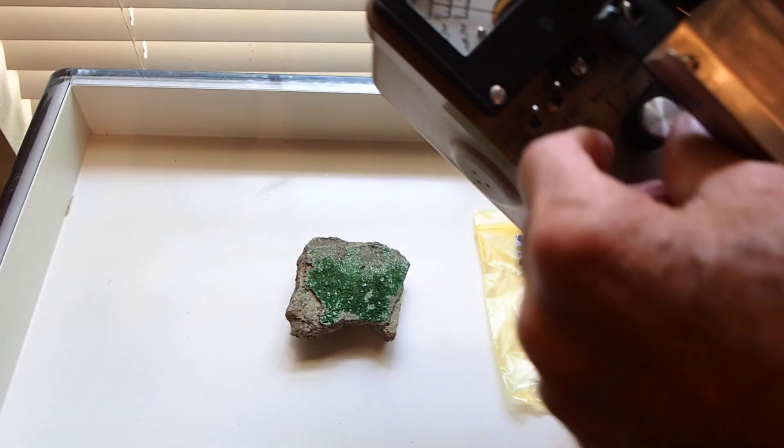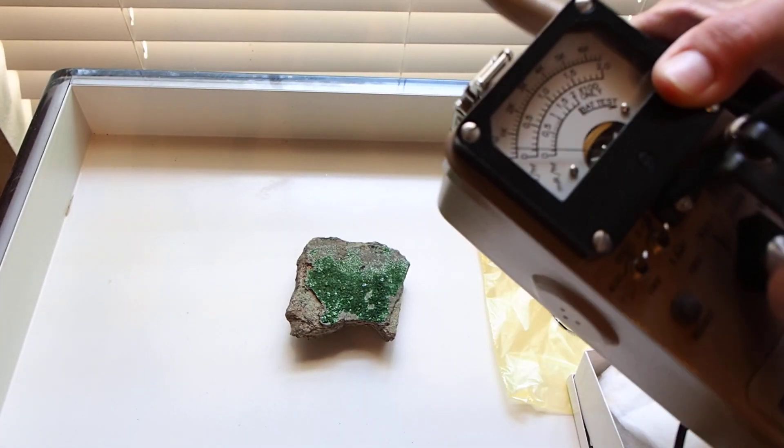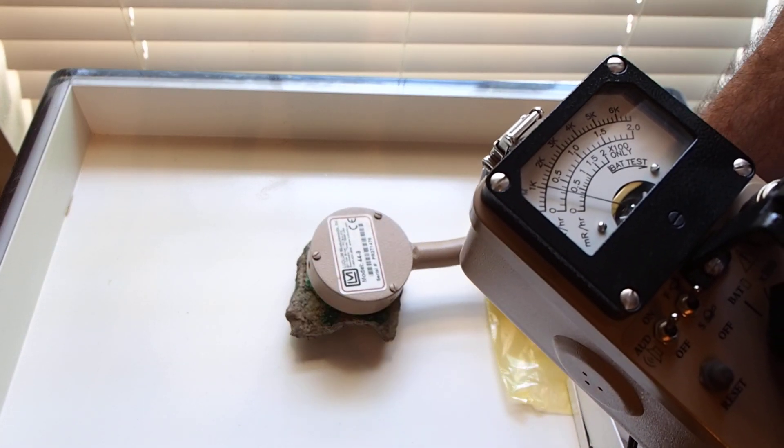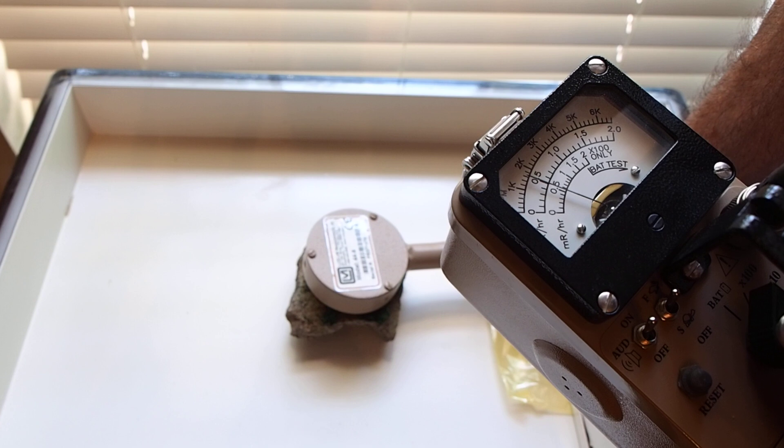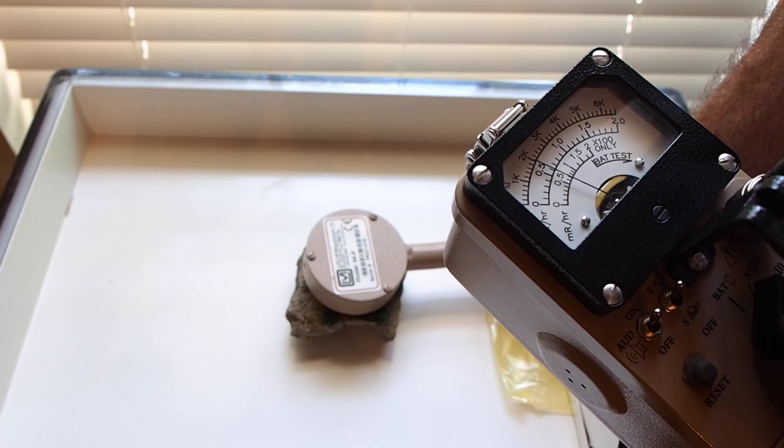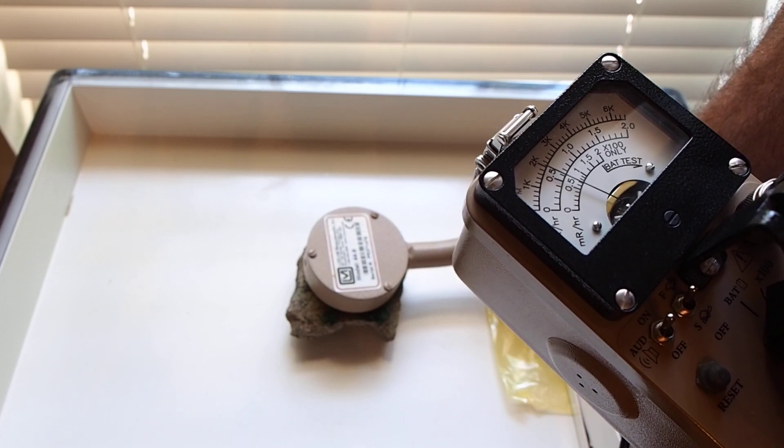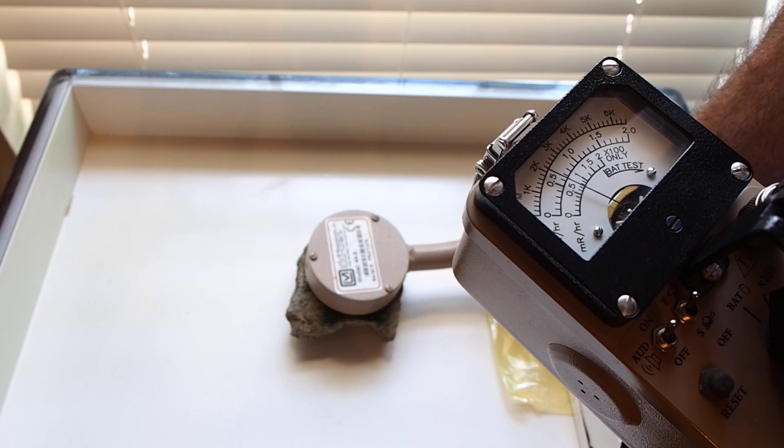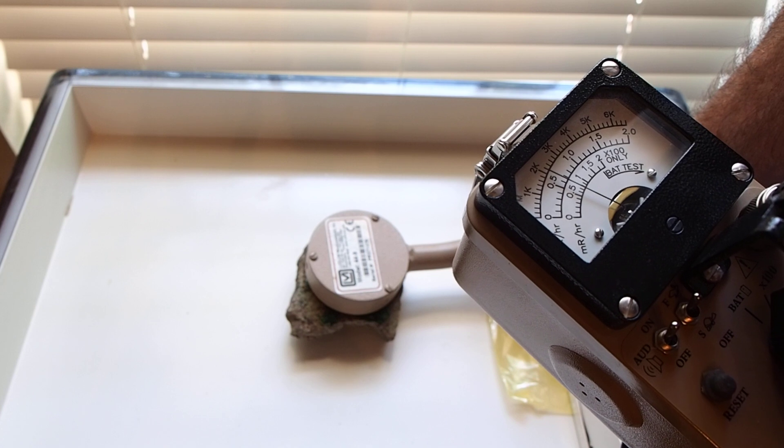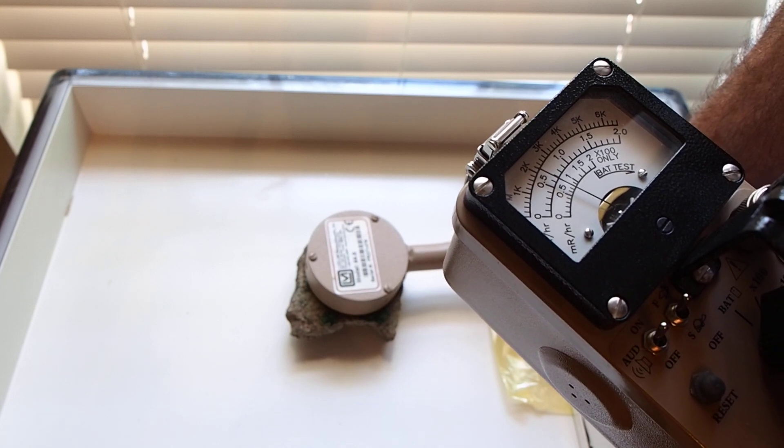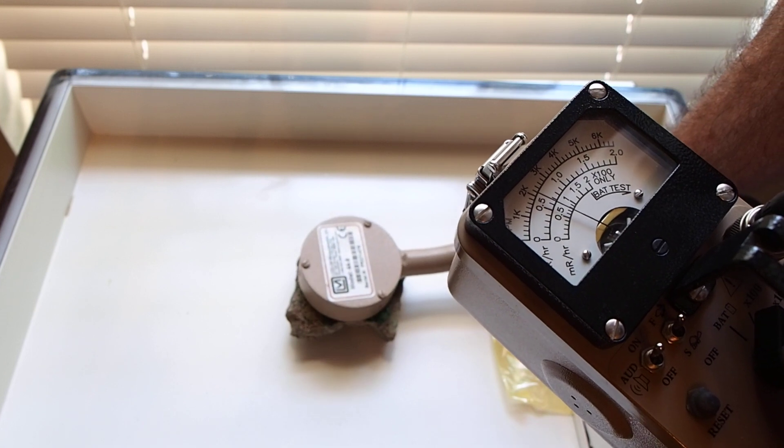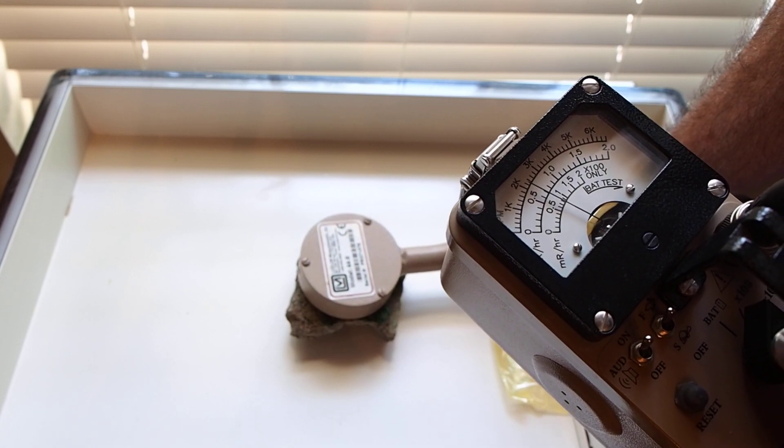Go back to the times 100 setting. We're not making contact with the specimen to avoid contamination of the detector. But we're very close. Perhaps less than a half an inch. And again, we're getting a maximum count rate that's edging up to about 220,000 counts per minute. Maybe a little higher.